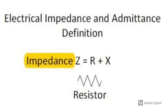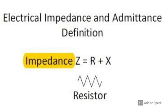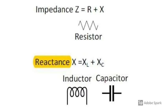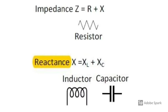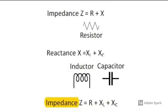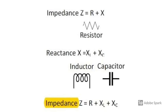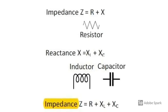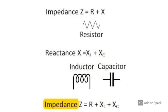Impedance is the sum of resistance and reactance. Reactance X is the sum of inductive reactance and capacitive reactance. So impedance can be written as the sum of resistance and inductive reactance and capacitive reactance.